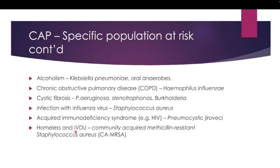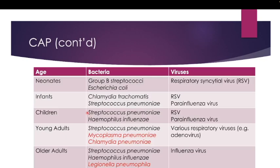Those who are homeless and intravenous drug users are prone to community acquired MRSA — methicillin-resistant Staphylococcus aureus, or CA-MRSA. MRSA is resistant to multiple types of antibiotics and usually affects those in healthcare centers, which is why it is typically a causative agent for hospital acquired pneumonia; however, homeless individuals and IV drug users are also prone to community acquired MRSA.